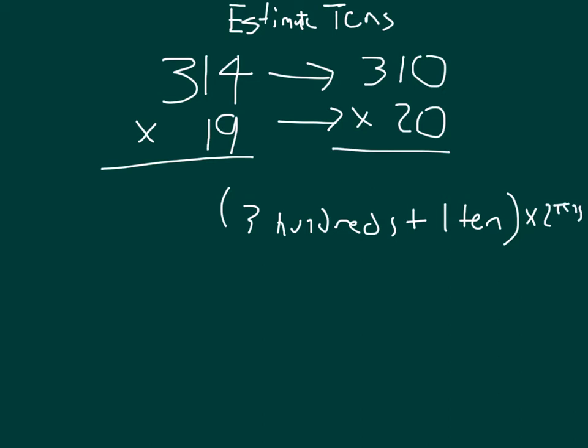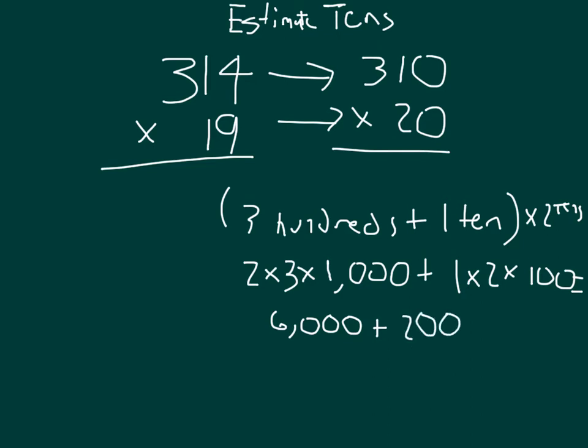Remember, distributive property: 2 tens times the 3 hundreds, we get 2 times 3. 3 hundreds times 10, which is 10 hundreds, which is 1,000, plus 1 ten times 2 tens. So that's 1 times 2 times 100, because that's 10 tens. And so we have 6,000 plus 1 times 2 is 2 times 100 is 200. We get 6,200.